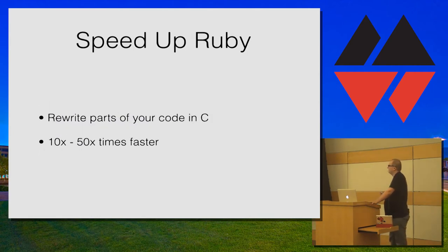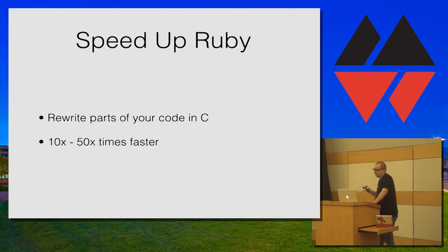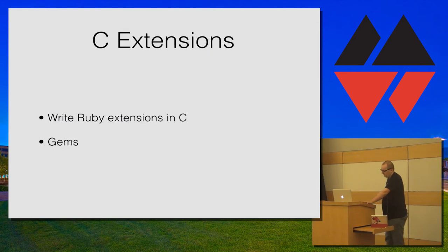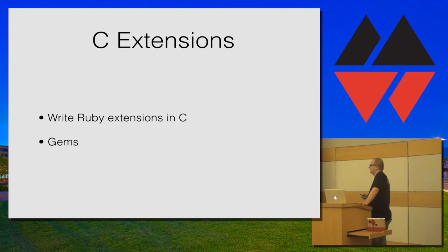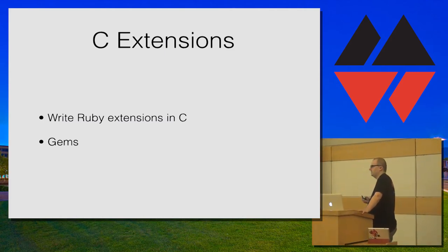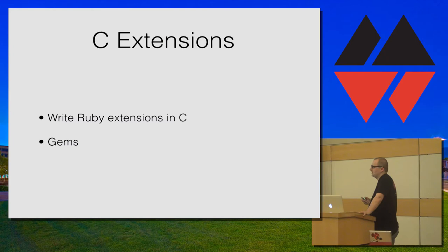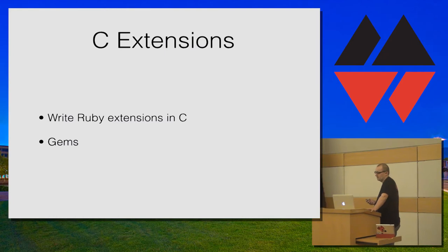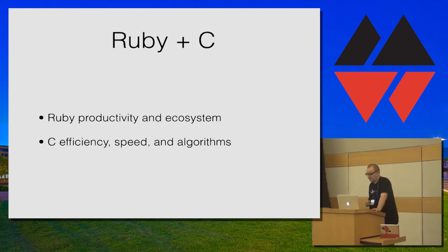Another good benefit of knowing C and knowing how to interface C with Ruby is to speed up your code. I'm not telling you to rewrite your web applications in C, but you should profile your app and maybe there are tight loops that you can rewrite in C, and you will realize you can get 10 to 50 times faster code. And of course if you want to write Ruby extensions in C, there are examples like Psych that you can use as reference. A lot of gems are actually Ruby extensions.